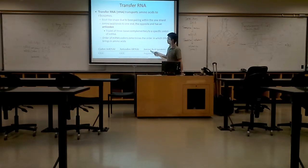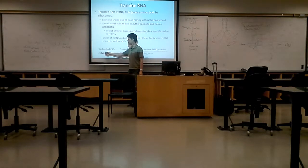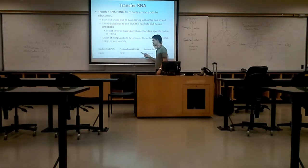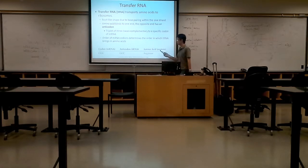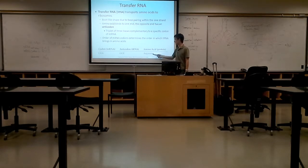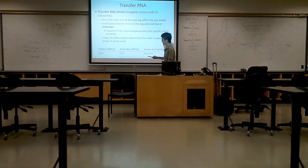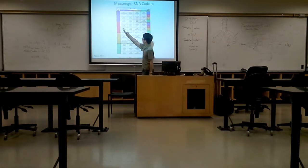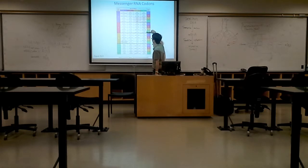Here is another example. If the codon on the messenger RNA is CGG, then the anticodon on the transfer RNA will be GCC. The transfer RNA will also carry the amino acid arginine. Let's double check with the table: CGG on the messenger RNA — C, then G, then G — CGG will be arginine.